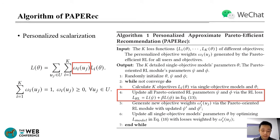We build a personalized scalarization-based loss with personalized objective weights as the overall loss function. The right figure gives the pseudocode of the PAPER algorithm. In each batch, we first calculate the losses of each single-objective model. Second, we update all Pareto-oriented RL parameters via the RL losses. Third, we generate new objective weights with the updated Pareto-oriented RL model and calculate the weighted personalized scalarization with the new objective weights. Finally, we update the two single-objective models according to the weighted losses.